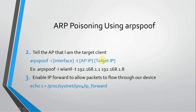The last thing we need to do is enable IP forwarding, because we are acting as the man in the middle and we don't want to drop the packets. To do that, we run the IP forwarding command. You can copy-paste it. Let's get into Kali and see how it's done using ARP spoof.